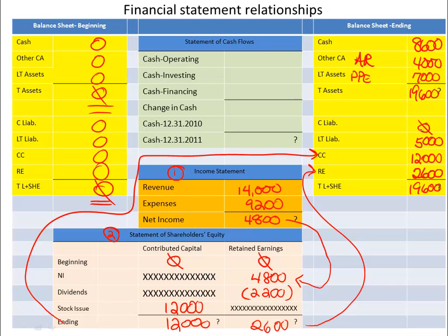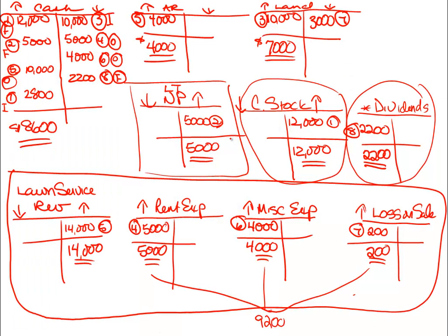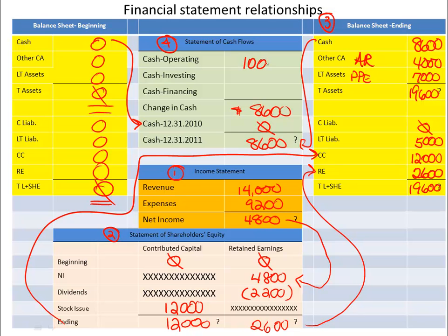The final statement we prepare is the cash flow statement. We began the year with a cash balance of zero and ended with $8,600, so cash increased $8,600. Looking back at our cash account for operating activities: cash inflows were $10,000 and outflows were $5,000 and $4,000, netting to a cash inflow of $1,000 from operating activities.